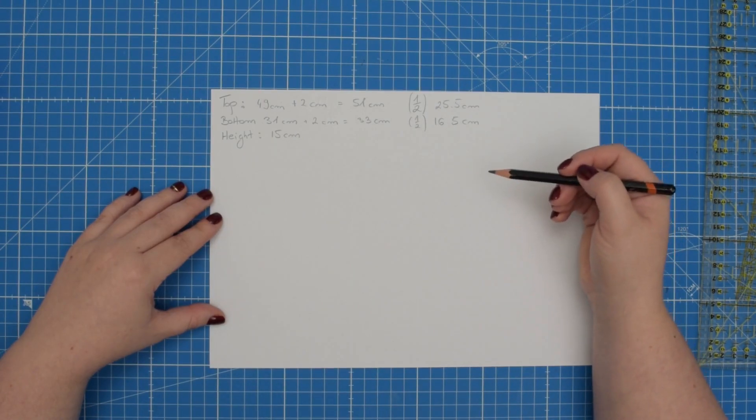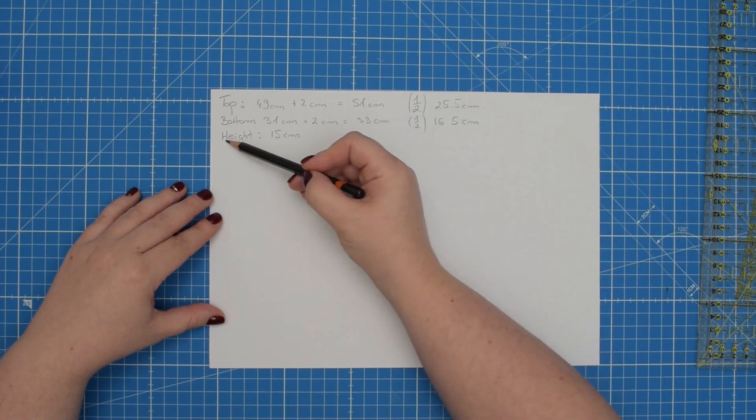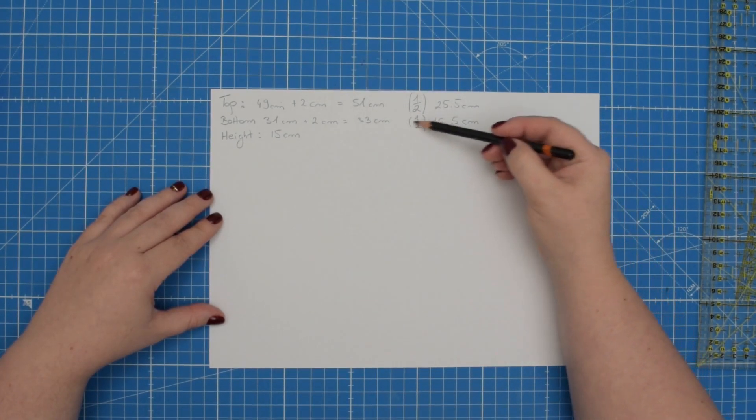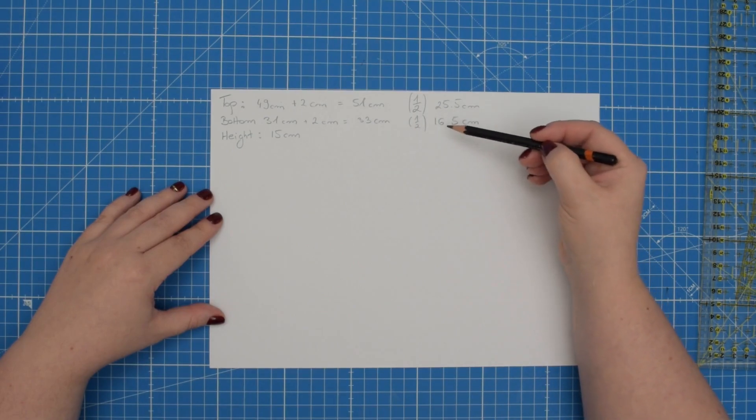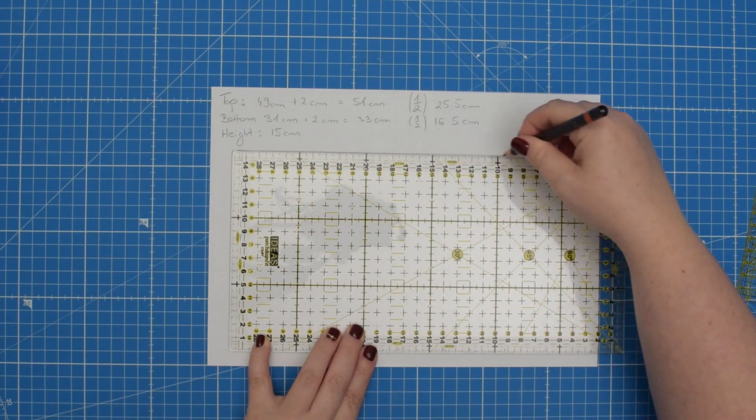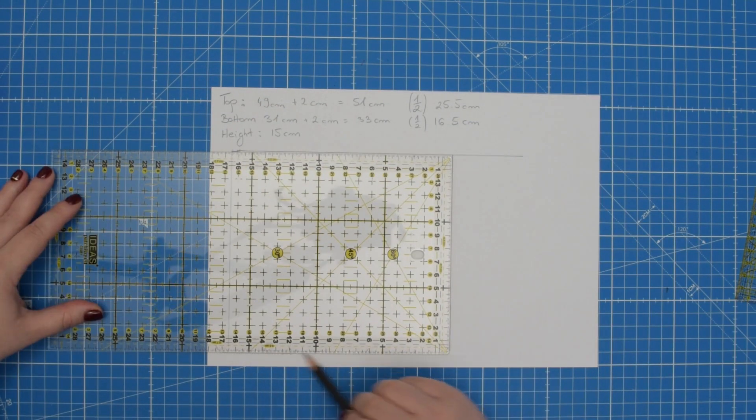To begin you will need to draft a rectangle that is the height of your flower pot and also the half measurement of the bottom circumference. So I'm going to take my ruler and simply draw a rectangle.